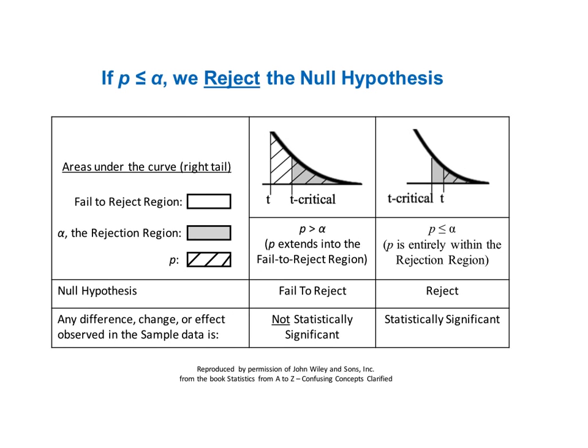The third column illustrates the opposite case. The hatched area representing P is smaller than the shaded area representing alpha, so P is less than alpha. The hatched area representing P fits entirely within the rejection region representing alpha, so we reject the null hypothesis. And since the null hypothesis says that there is not a statistically significant difference, change, or effect, we conclude that there is.